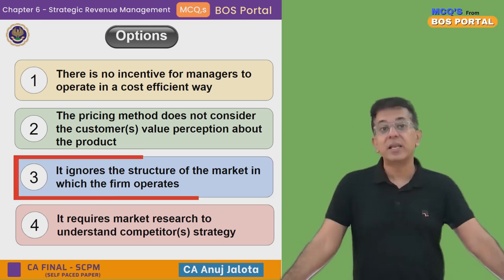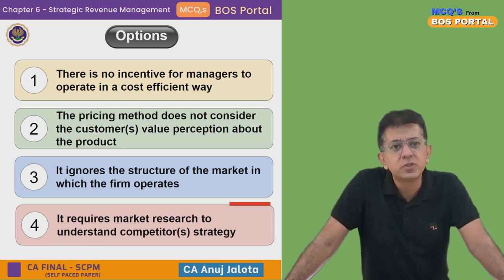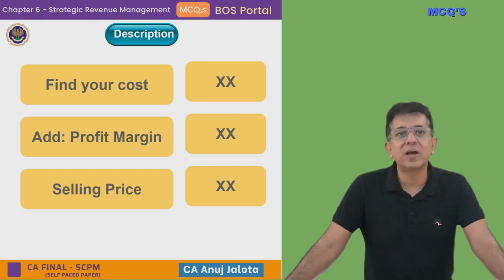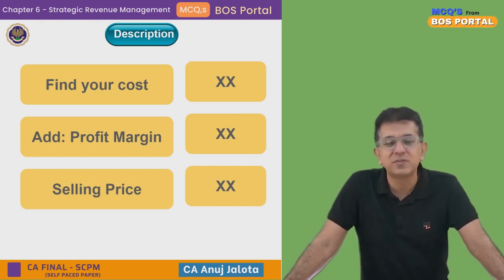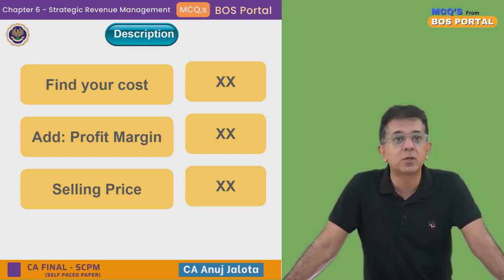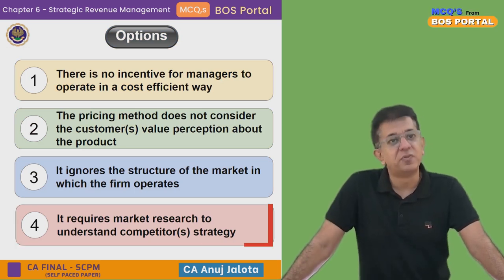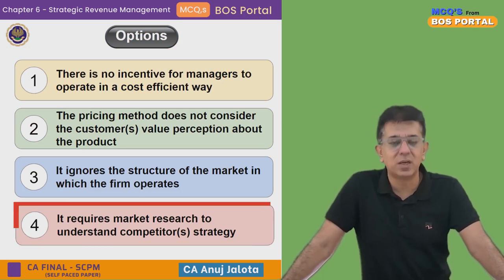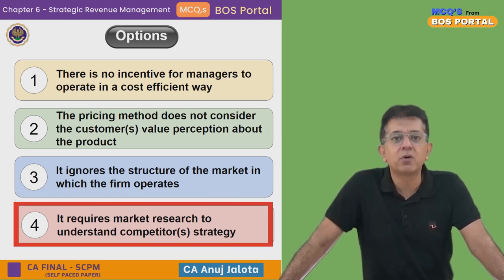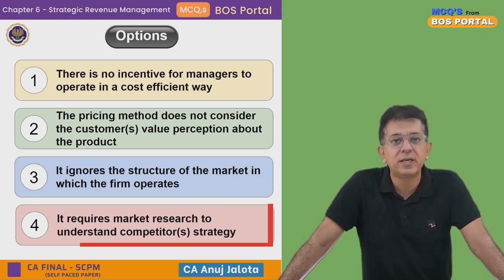Option 4: It requires market research to understand competitor strategy. Honestly, cost-plus pricing does not require any strategy from anyone — it is very simple. You just find out your cost and add your desired profit margin. It does not involve looking at competitors' costs or strategies at all. So this is NOT a drawback of cost-plus pricing. The first three are drawbacks; Option 4 is the correct answer.